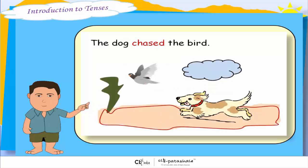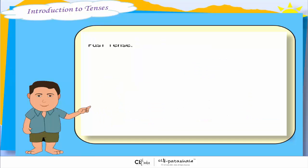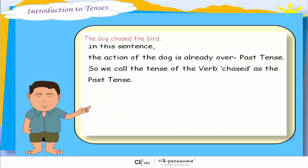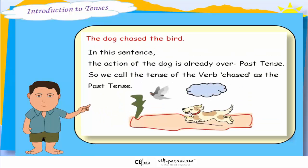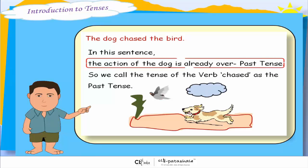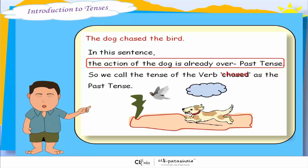'The dog chased the bird.' In this sentence, the action of the dog is already over. So we call the tense of the verb 'chased' the past tense.